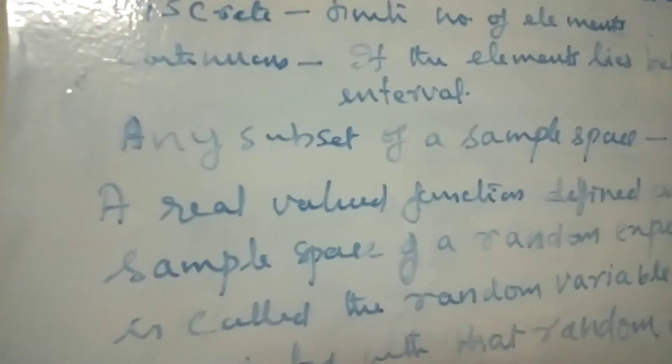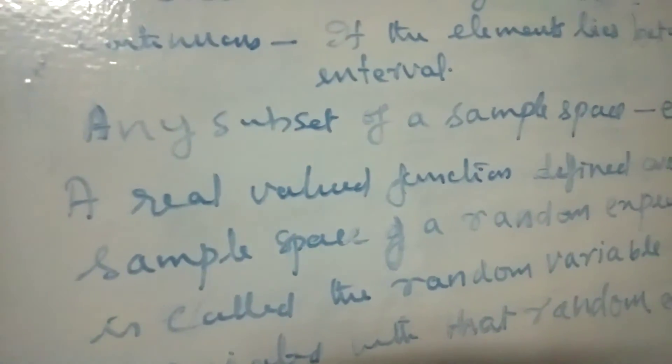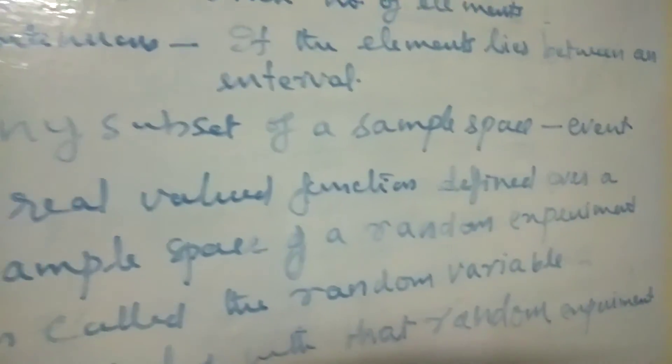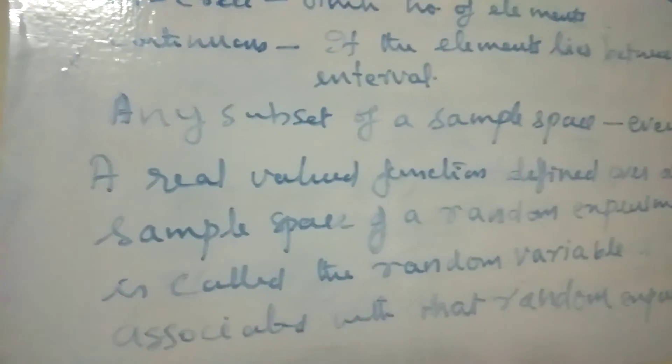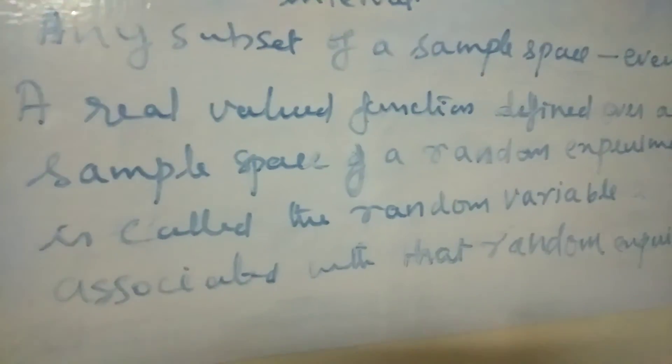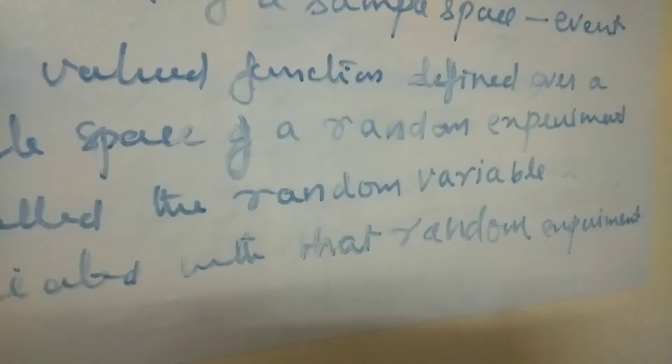Now we are defining the random variable. A real valued function defined over a sample space of a random experiment is called a random variable associated with that random experiment.